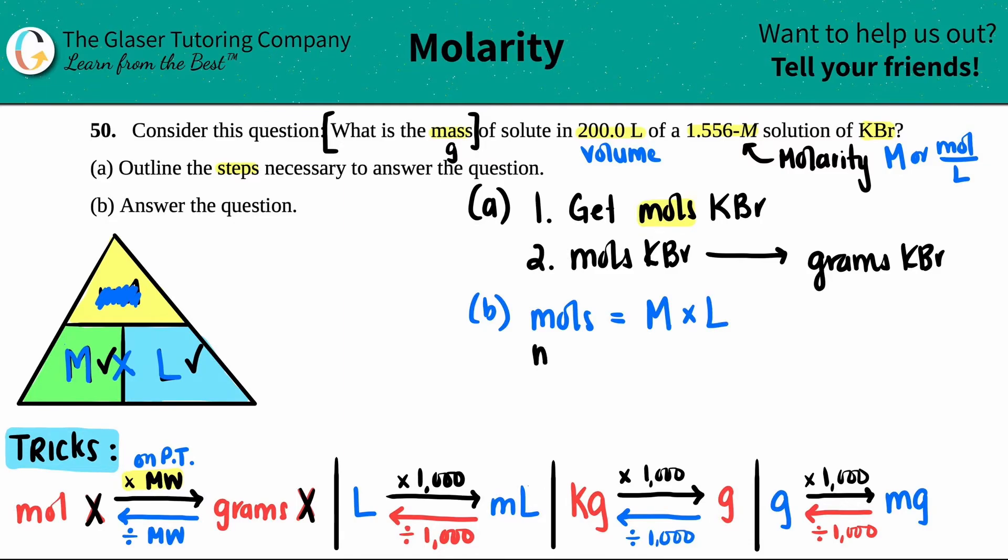Now let's get to it. Moles of the KBr equals the molarity, which would be 1.556. And if you want to just keep the numbers in, that's fine. I don't really care. Right. I'm just going to put the units. So it would be 1.556 molarity times the 200.0 liters.